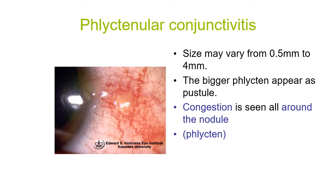The conjunctival congestion is bright red, away from the limbus and surrounding the nodule. The size may vary from 0.5 mm to 4 mm. Bigger phlycten appear as a pustule — there are stages: nodule, vesicle, and pustule (when there is pus formation). The congestion is seen all around the nodule; that is called a phlycten.